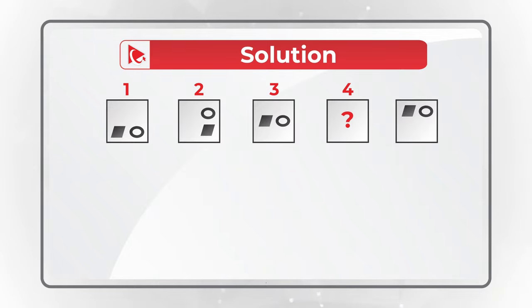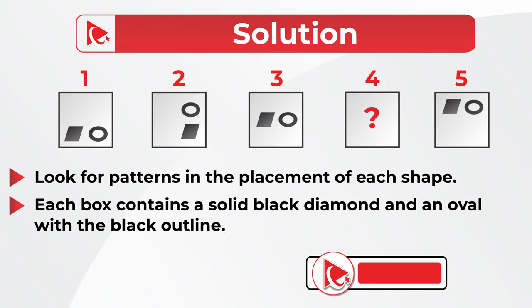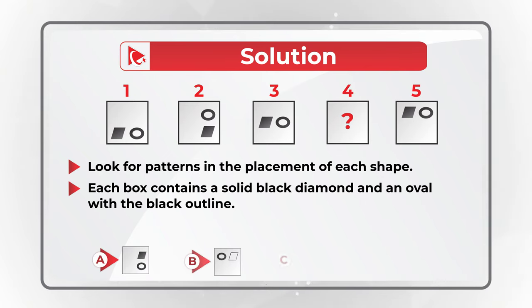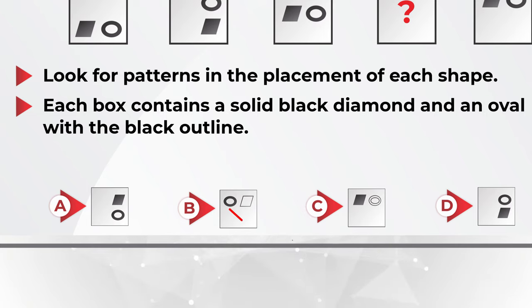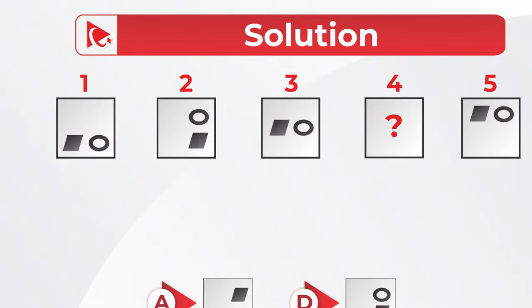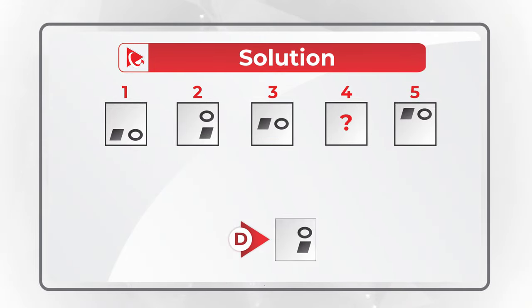My advice as usual: always look for patterns. In this case, the pattern is the location of the smaller shapes inside the square. You might have noticed that the smaller shapes inside are always a diamond filled with black and an oval with a black outline. This pattern is persistent for shapes 1, 2, 3, and 5, so we can safely assume square 4 will have similar shapes inside — automatically excluding choices B and C, leaving possible choices A and D. The second pattern is that the oval is always next to the diamond, either to the right or on top of the diamond. Based on this, the correct choice is Choice D.